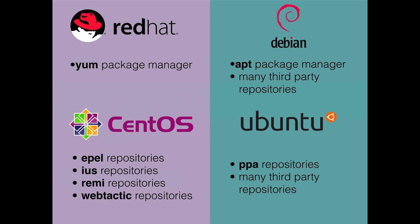Debian and Ubuntu are very close. They both use the apt package manager and both have many third-party repositories available to get newer versions of software. Ubuntu additionally has a PPA repository, which is a special Ubuntu feature that makes adding repositories really easy to get the latest software.